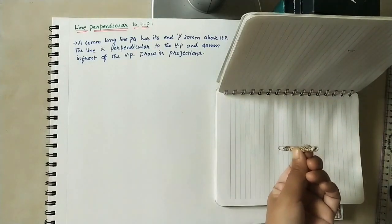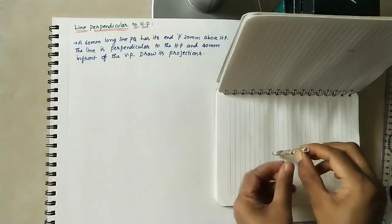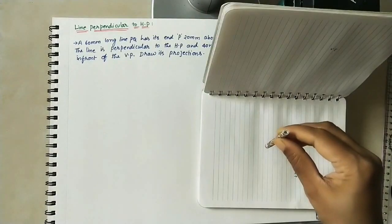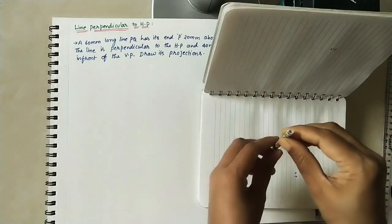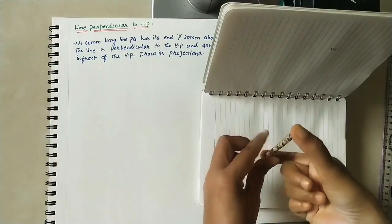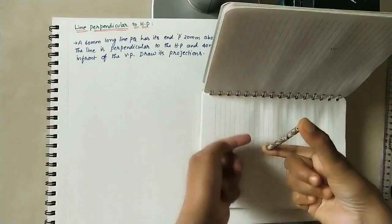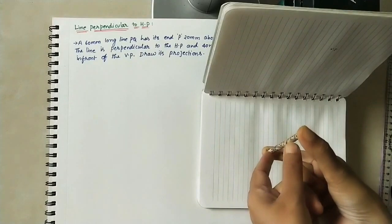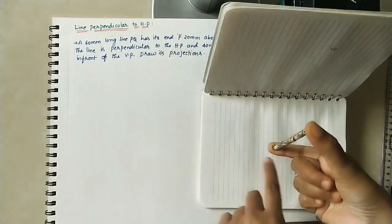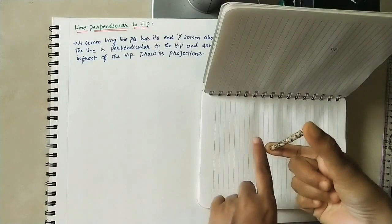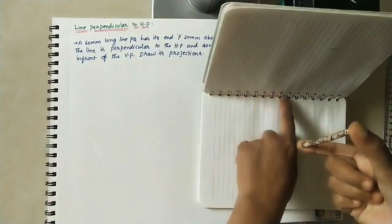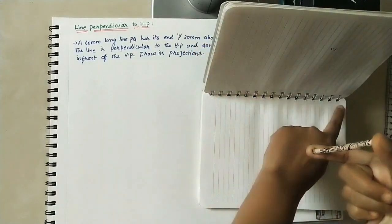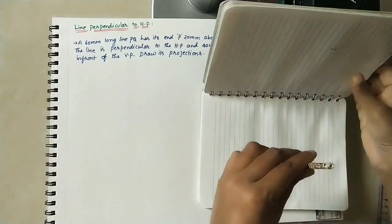We need to draw the projections — the front view and top view of this line. The front view is seen from the front; we can see the entire length on the vertical plane, and also the 20 mm gap. The intersection of the vertical plane and horizontal plane is taken as the XY line, which is the reference line, and we do the projections from here.